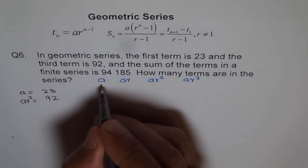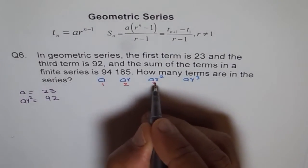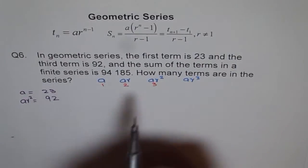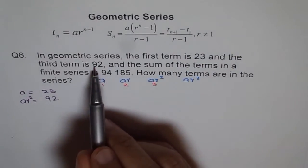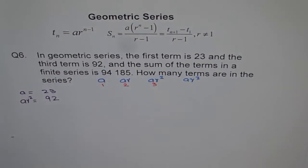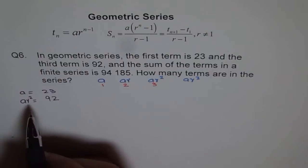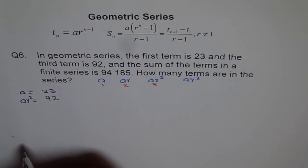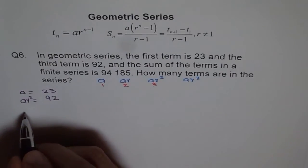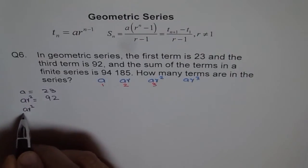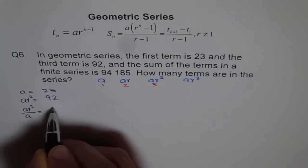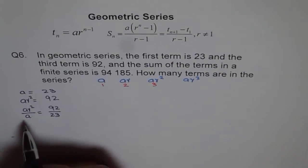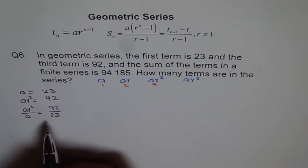These are the terms: term number 1 is a, term number 2 is a·r, term number 3 is a·r², and so on. So a is 23, and a·r² is 92. Now if I find the ratio by dividing them — a·r² divided by a equals 92 over 23 — then a and a cancel and we get r² equals 92 over 23.